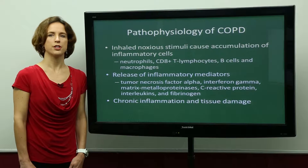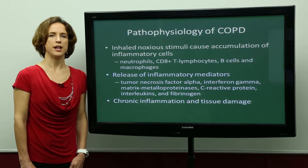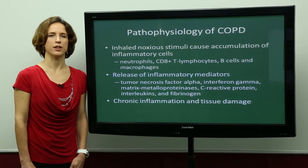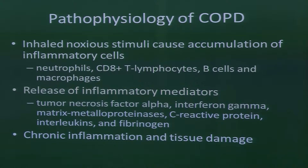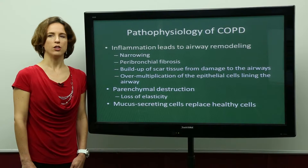These inflammatory cells include neutrophils, CD8 cells, T lymphocytes, B cells, and macrophages. These cells release inflammatory mediators including tumor necrosis factor alpha, interferon gamma, and several others as you see listed. All of these inflammatory mediators go on to activate the cells and cause chronic inflammation and tissue damage.